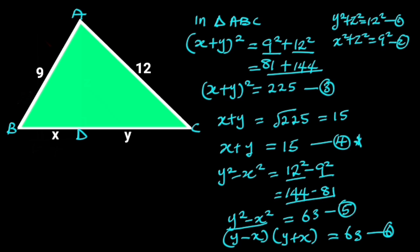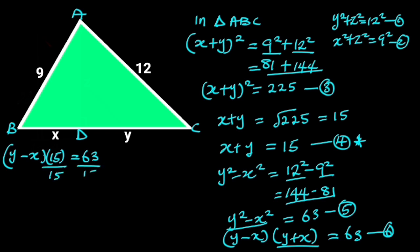Since y plus x is equal to 15 from equation 4, substituting into equation 6 gives (y minus x) times 15 is equal to 63. Dividing both sides by 15, and reducing 63 over 15, gives us y minus x equal to 21 over 5. Let's call this equation 7.